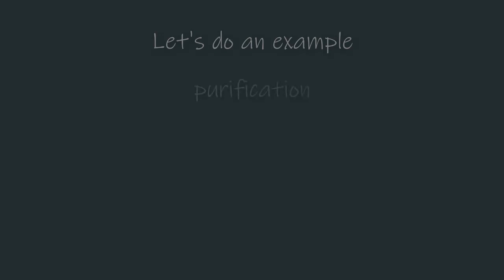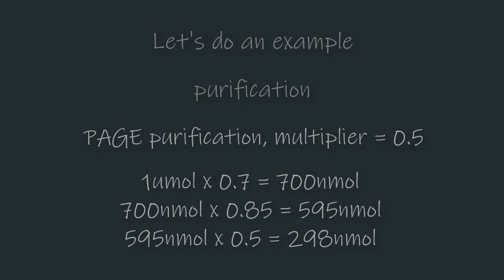Purification is the third primary parameter that affects yield. For example, page purification often has a 0.5 multiplier, meaning our example oligo would have a yield of about 298 nanomoles.